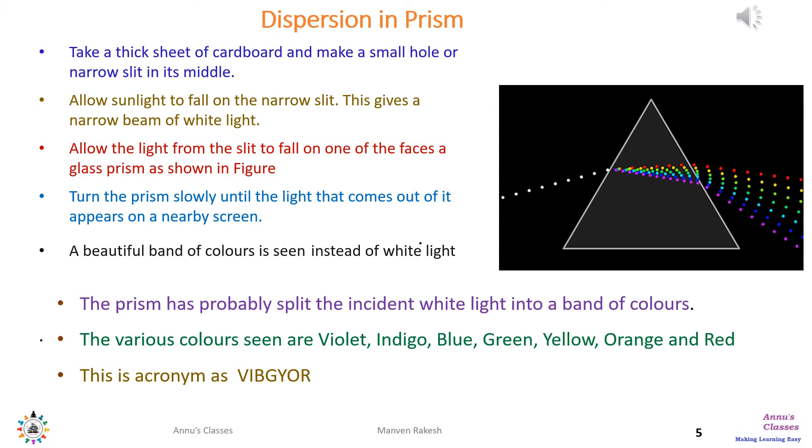On the other side, adjust a screen so that the light coming from the prism falls on that screen. After some adjustment we will get the image, and you will be surprised to see not the white light which was passing through the slit, but a multicolored band.